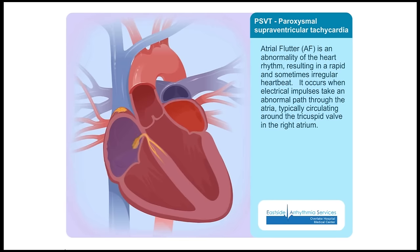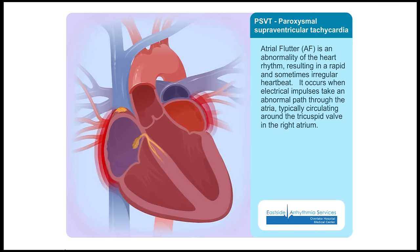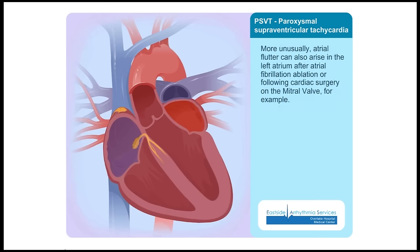Atrial flutter is an abnormality of the heart rhythm, resulting in a rapid and sometimes irregular heartbeat. It occurs when electrical impulses take an abnormal path through the atria, typically circulating around the tricuspid valve in the right atrium.